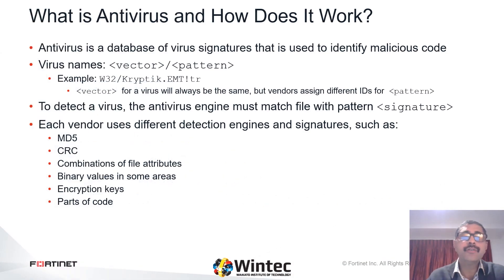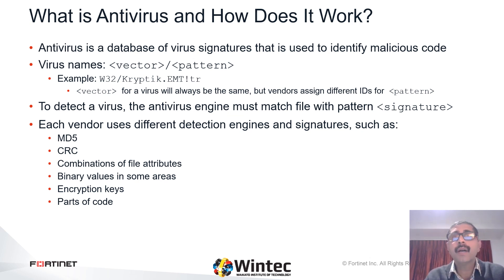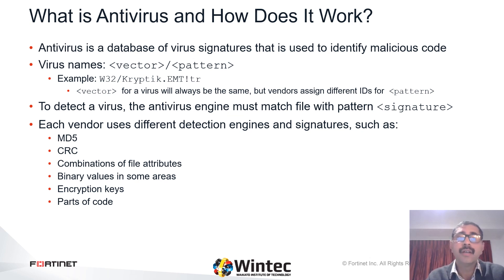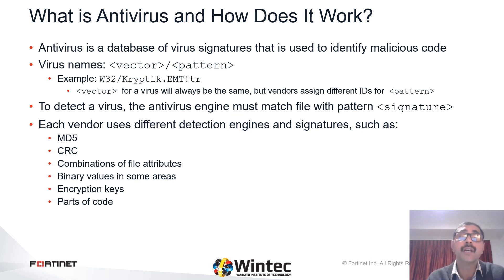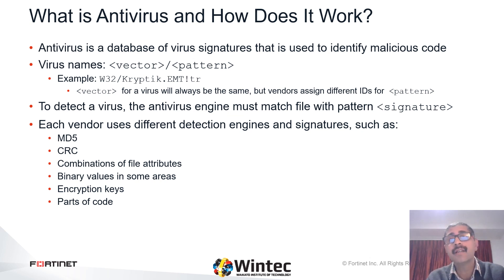Let us first understand what an antivirus is and how it works. An antivirus is a database of virus signatures that is used to identify infections. During an antivirus scan, in order to be detected as a virus, the virus must first match a defined pattern called a signature. Different vendors assign different names to the same virus.